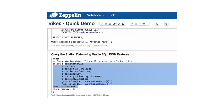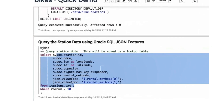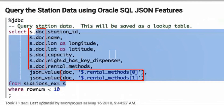Now, we query the station data in JSON format by using a simple SELECT statement. This query uses new Oracle database JSON capabilities. The external table column name is doc, but you can access fields within each JSON record by using the JSON attribute reference — for example, doc.name for the name attribute.